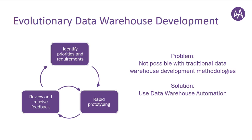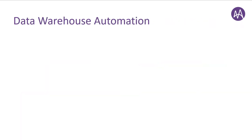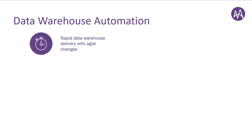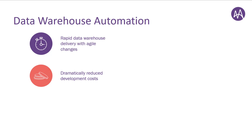Data warehouse automation does a number of things for you. First of all, it allows you to deliver data warehouses rapidly and make incremental changes, by automating much of the design, build and maintenance of your data warehouse. So you can pull data from virtually any source or cloud-based platform and deploy new functionality rapidly in days and weeks, not months and years. It also dramatically reduces the development costs. As all of the development using data warehouse automation is metadata driven, minimal coding is required, and as such, fewer ELT developers are needed and a high quality solution can be delivered in a very short timeframe.